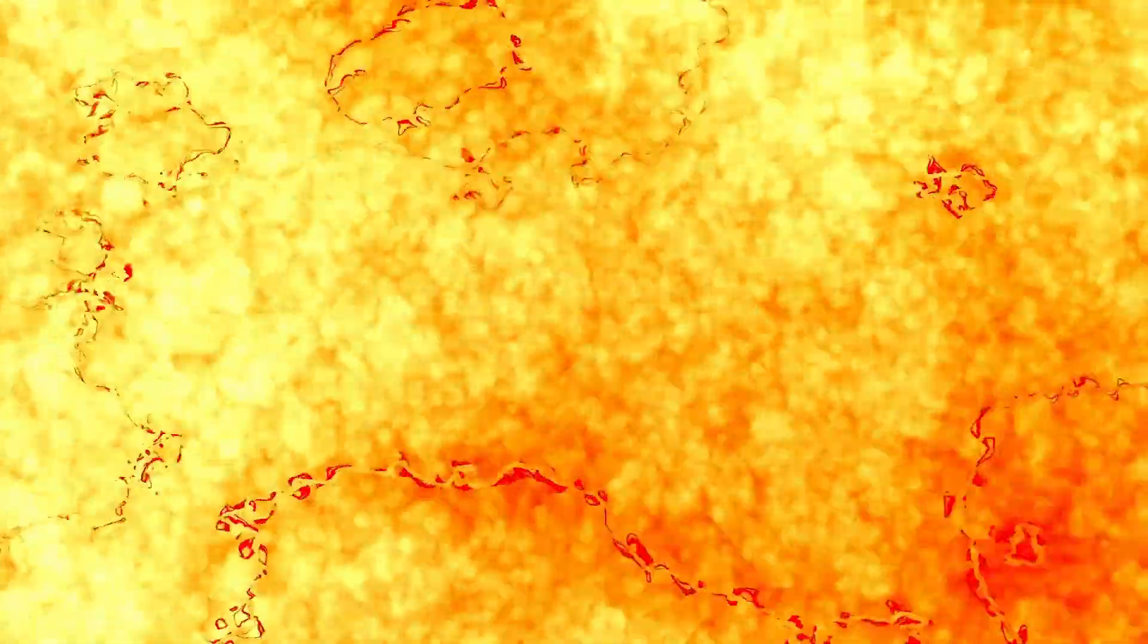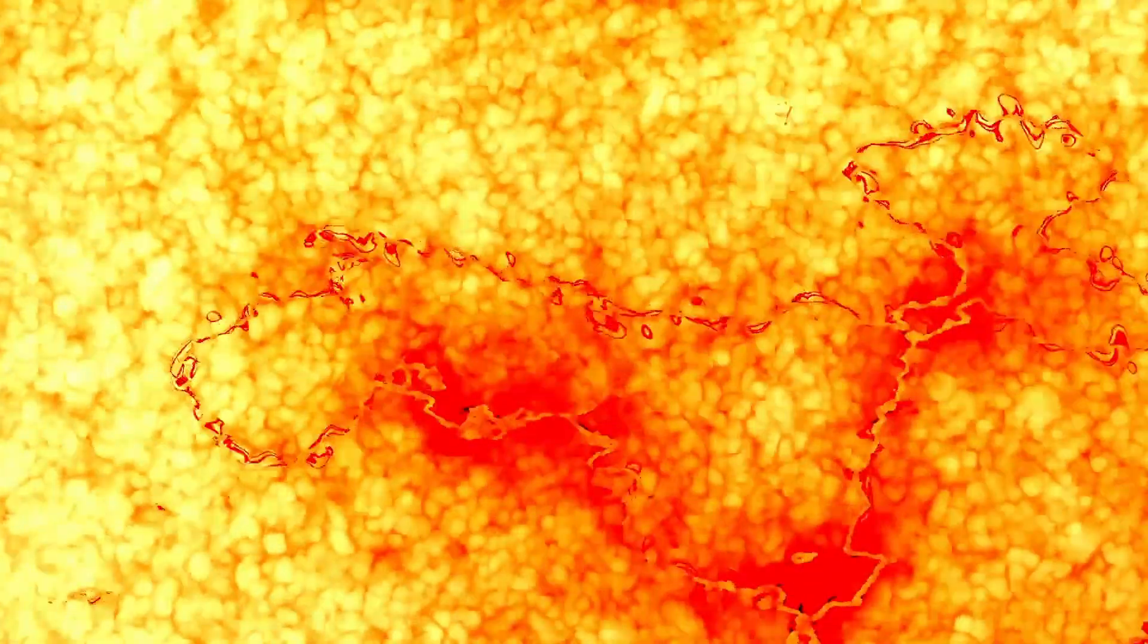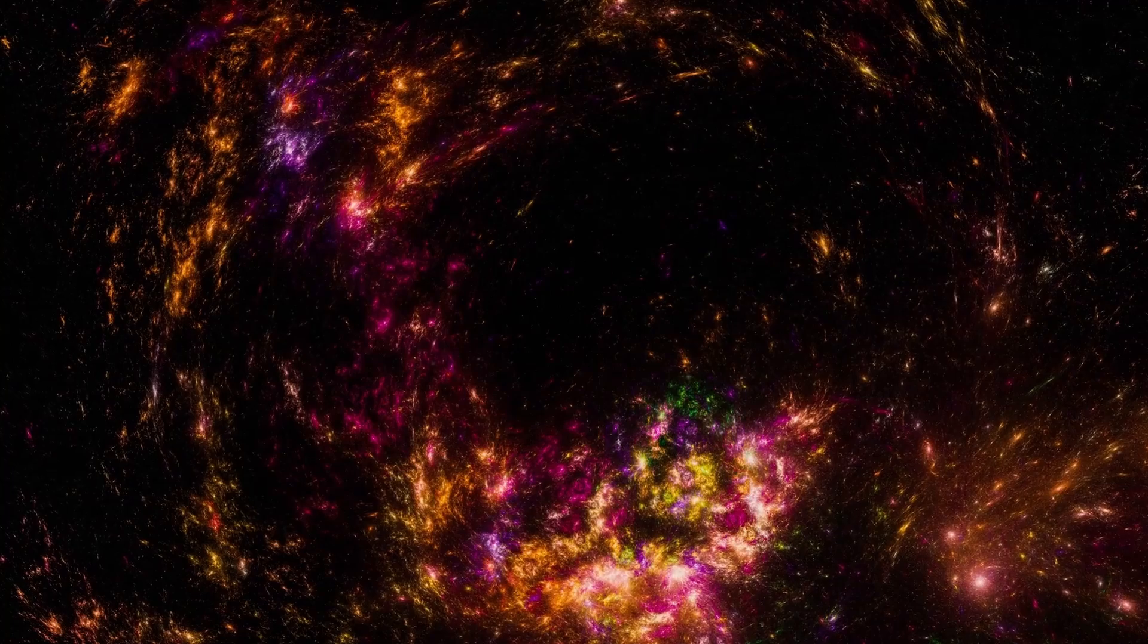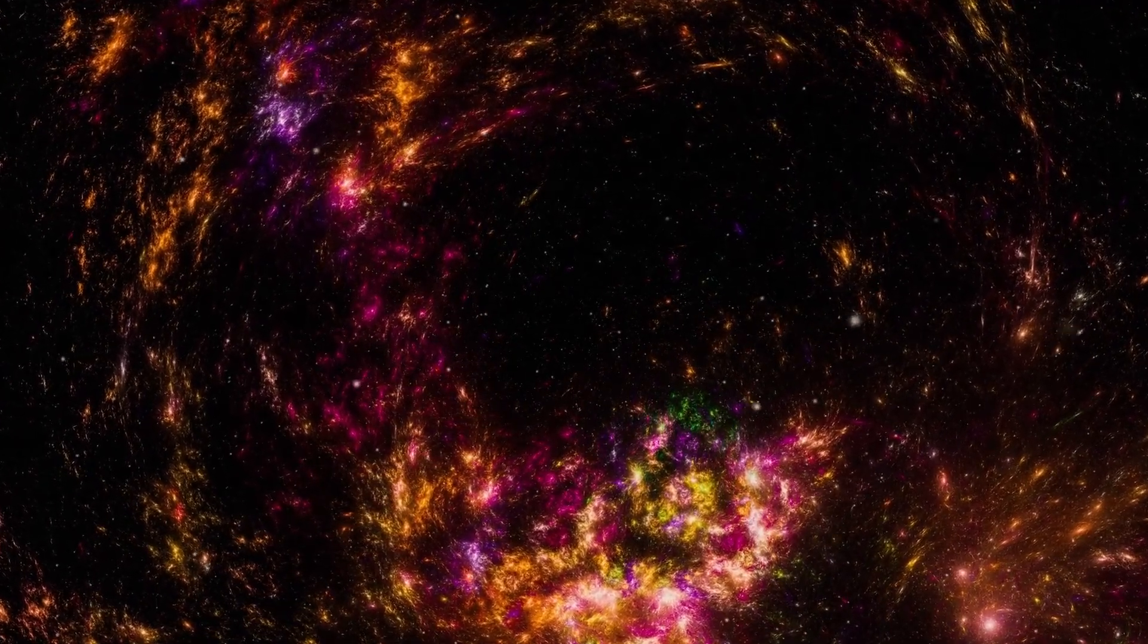But what it revealed wasn't just breathtaking, it was deeply unsettling. In its ultra-deep field images, Webb found galaxies so old, so massive and well-formed that they should not exist. These galaxies appeared less than 600 million years after the Big Bang, but were already mature, dense, and filled with supermassive black holes, some of which are 1,000 times more massive than the one in the center of the Milky Way.